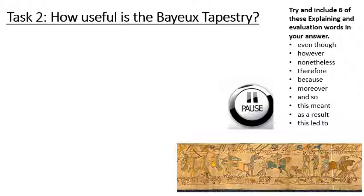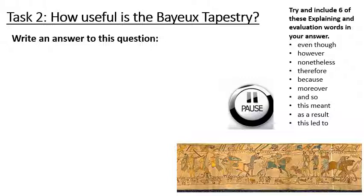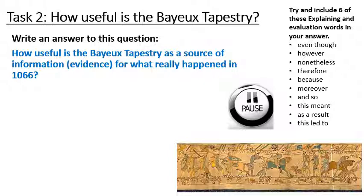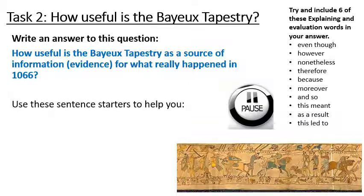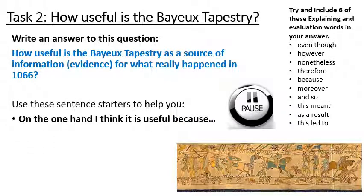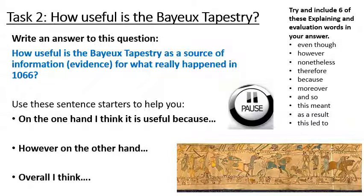For task two: how useful is the Bayeux Tapestry? I'd like you to write an answer to this question: how useful is the Bayeux Tapestry as a source of information or evidence for what really happened in 1066? Go back through the video to find the information you need. You can use these sentence starters to help: 'On the one hand I think it is useful because...', 'However on the other hand...', and 'Finally, overall I think...' for your conclusion. Try to use some of the explaining and evaluation words listed on the right-hand side of the screen.